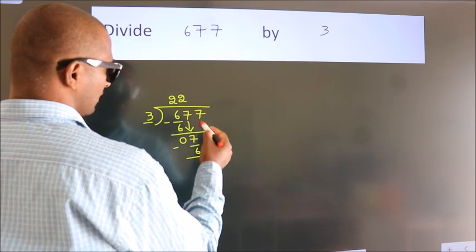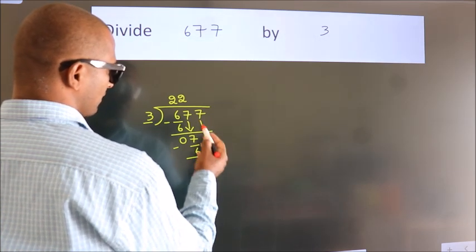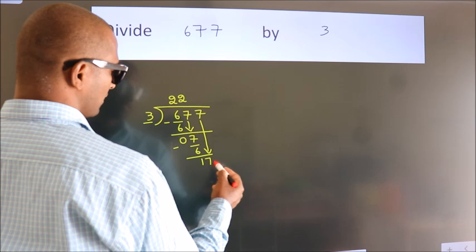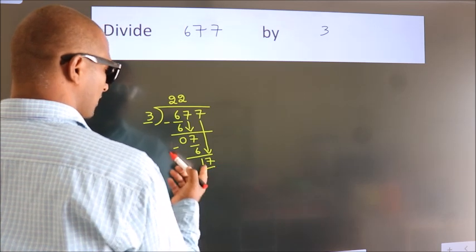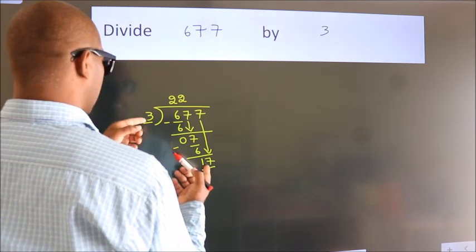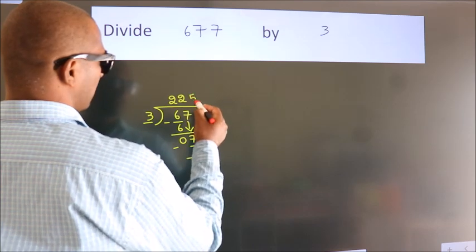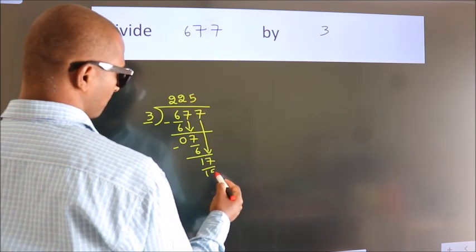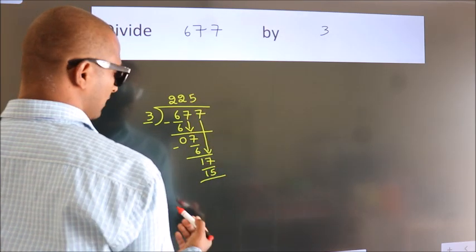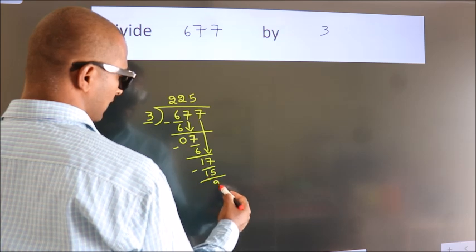After this, bring down the beside number. 7 down. So, 17. A number close to 17 in 3 table is 3 times 5, 15. Now, we subtract. We get 2.